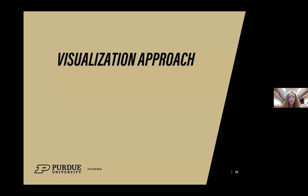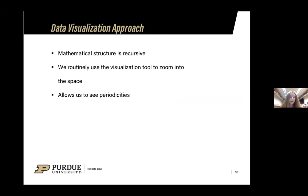For our computation, we have over 100 petabytes of data that goes into this project. It's a lot of data. We have three clusters that we store our data on and we run our computations on. They are Brown, Scholar, and Halstead. So, Brown has the most cores with 24 cores per node, with Scholar and Halstead following with 20 cores per node. In the data mine, we actually use Scholar to do our projects on. So, now we're moving to the visualization approach.